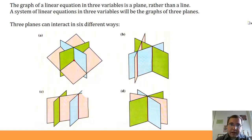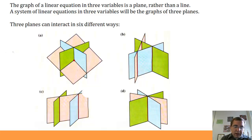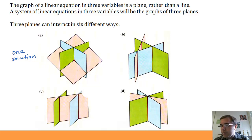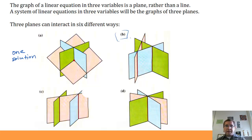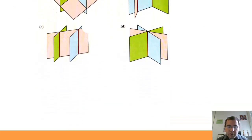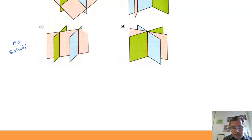Now we have three planes, and there are six different ways they can interact. First, they can all intersect in exactly one point — that red dot in the center of diagram A — giving one solution. Or, as in diagram B, any two planes intersect to form a line but there's no place where all three intersect, giving no solution. Or, as in part C, two of the planes are parallel and one cuts through them, also giving no solution.